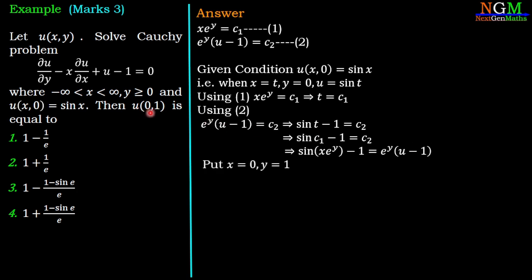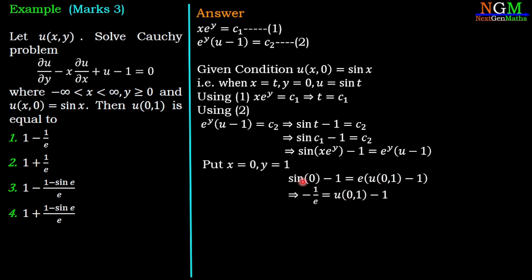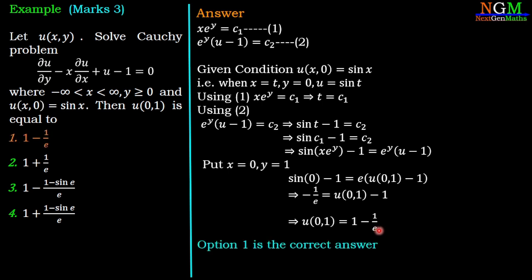We want to find the value of u(0,1), so we put x = 0 and y = 1 in this equation. With x = 0, sin(0) = 0, and e^1 = e. So: 0 − 1 = e·(u(0,1) − 1), giving −1/e = u(0,1) − 1. Therefore u(0,1) = 1 − 1/e, which is option number 1. So option number 1 is the correct answer.